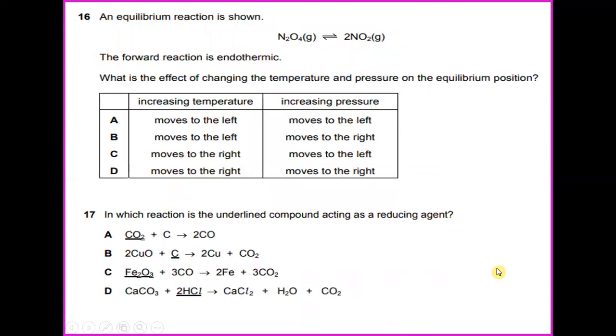An equilibrium reaction is shown. N2O4 reacts to produce 2NO2. And on the other hand is 2NO2 to produce N2O4. The forward reaction is endothermic. What is the effect of changing the temperature and pressure on the equilibrium position? The answer for this question would be C. When increasing temperature, it moves to the right. And when there is increasing in terms of the pressure, it moves to the left.